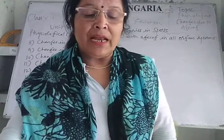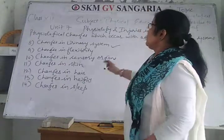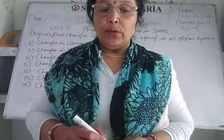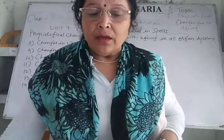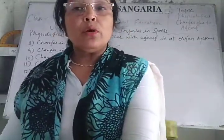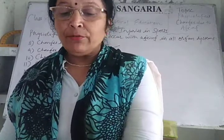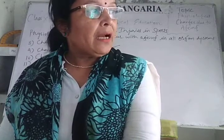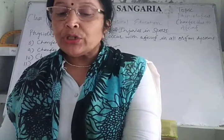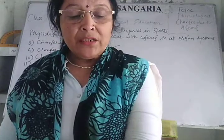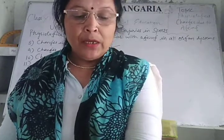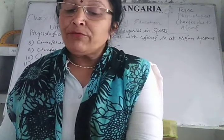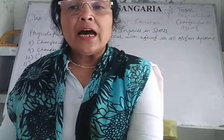Number 9 is changes in flexibility. Due to aging, joint motion becomes more restricted and flexibility decreases with age because of changes in tendons and ligaments. As the cushioning cartilage begins to break down from a lifetime of use, joints become inflamed and arthritic.